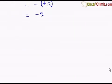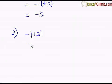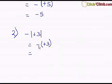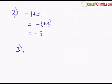Let's take another example: the negative of absolute value of positive 3. What is the absolute value of positive 3? It is positive 3. So I have negative of positive 3. I've solved the absolute value and put parentheses to distinguish the negative from the positive signs. Negative times positive is negative, so the answer is negative 3.